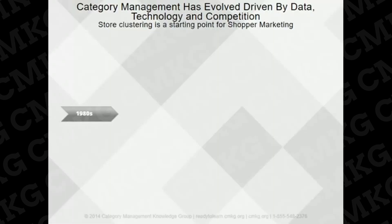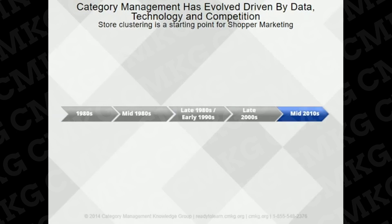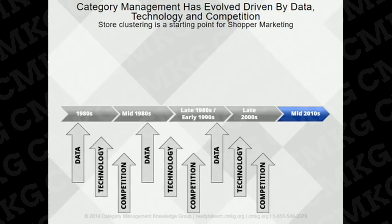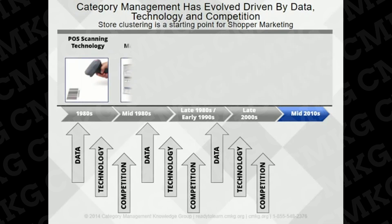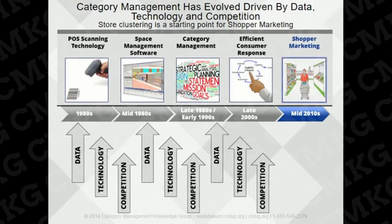As technology and data have evolved over the years and the retailer battleground for market data has continued, category management has continued to shift and evolve. The scope of category management has expanded to include new data sources such as shopper loyalty card data, geodemographic demand, store-level point-of-sale, and shopper insights.